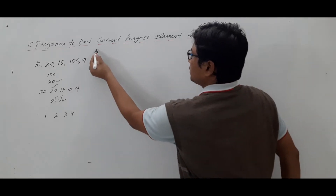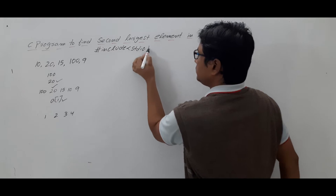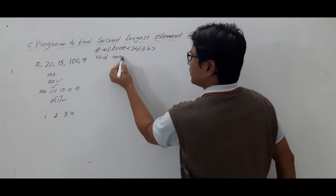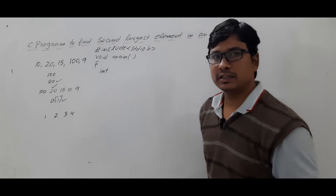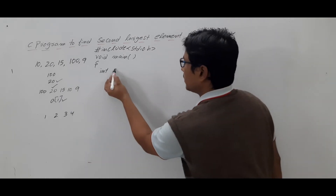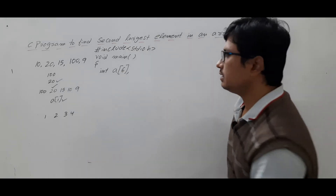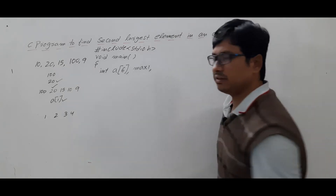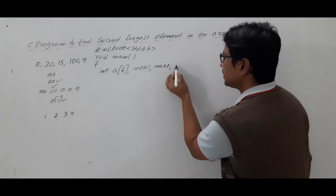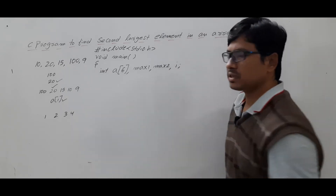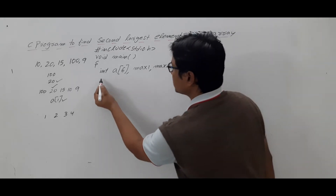Let me use the header file stdio.h and void main. I will declare the variables: an array 'a' of size 6, then 'max1' for the largest, 'max2' for the second largest, and a loop variable 'i'. Then I'll ask the user to enter the six elements.